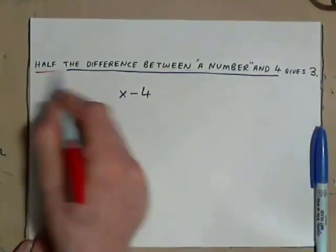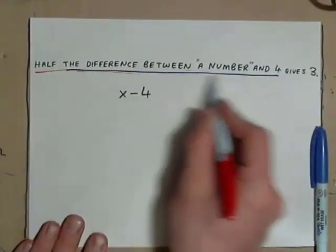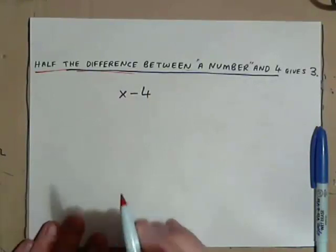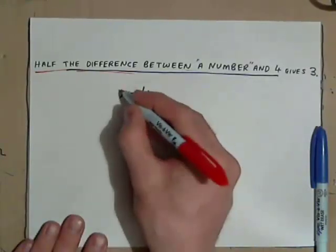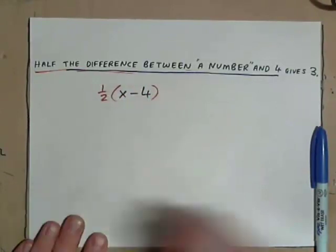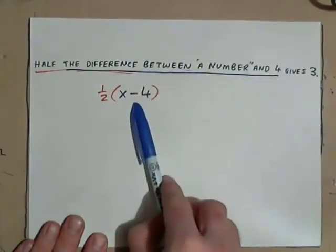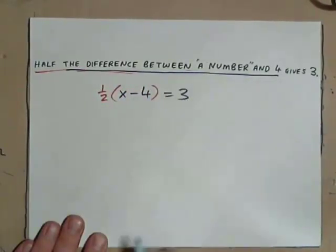Now, how do we write this? Half the difference between a number and 4. Well, this is the difference. Put the difference in parentheses. Now, get half of it. Half the difference between a number and 4 gives 3, and then we solve that.